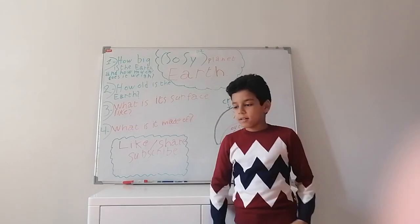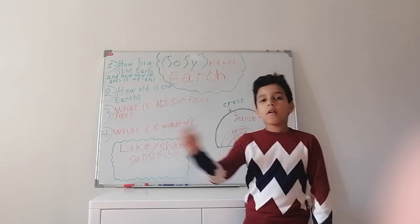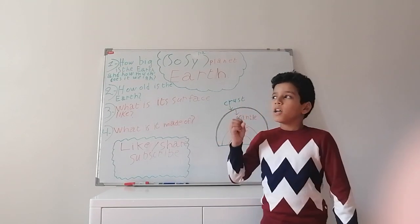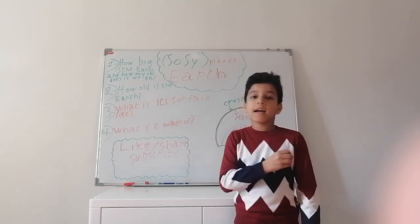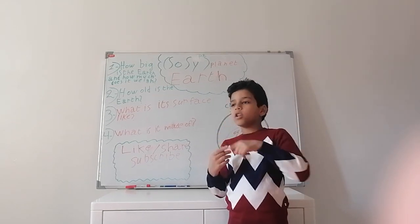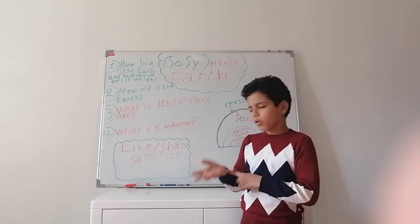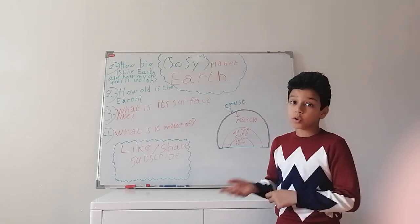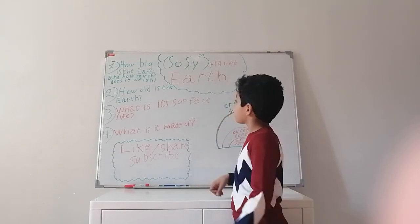The Earth is 12,742 kilometers in diameter. So if you dig from the top of the Earth to the bottom of the Earth, you get 12,742 kilometers in diameter. How much does it weigh? It weighs almost six trillion trillion kilograms. That is a lot.